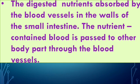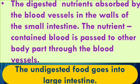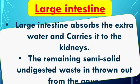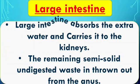In simple terms, all the nutrients from the food are absorbed by the blood vessels in the walls of the small intestine, and the blood which contains these nutrients is passed to all other body parts through blood vessels. The undigested food then goes into the large intestine.